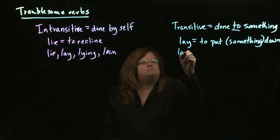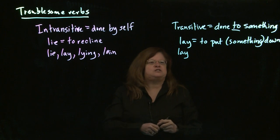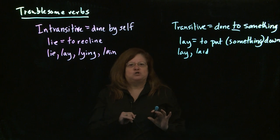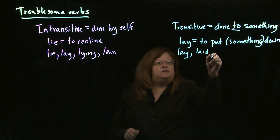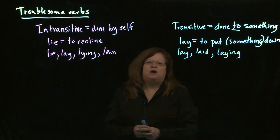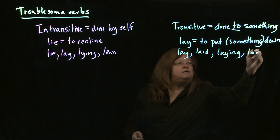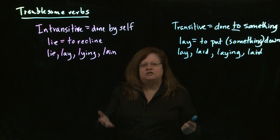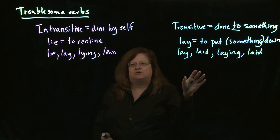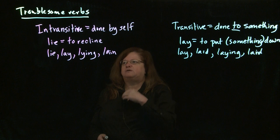For lay in the present tense: I lay my books on my desk every day. The past tense is 'laid' — yesterday I laid my books on the desk. The present participle is 'laying' — I am in the habit of laying my books in the same place so I don't lose them. And the past participle is also 'laid' — I have laid my books on the desk every day for 15 years. The most important thing to ask is: is there a direct object? If you're doing it to something, use lay. If you're just doing it yourself, it's intransitive — use lie.